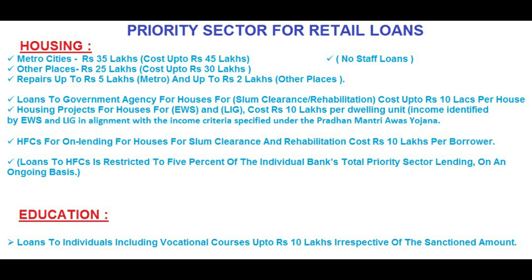Priority sector limits for housing loans: in metro cities, loan up to rupees 35 lakhs where cost of project is rupees 45 lakhs comes under priority sector. At other places, loan up to rupees 25 lakhs where cost of house is 30 lakhs qualifies. Repair and renovation loans up to rupees 5 lakhs in metro and up to rupees 2 lakhs at other places qualify. Staff loans do not come under priority sector. Loans to government agencies for slum clearance/rehabilitation cost up to rupees 10 lakhs per house qualify.